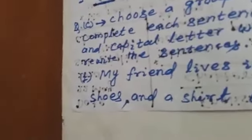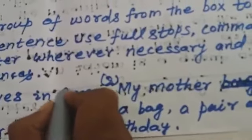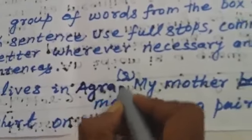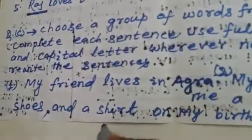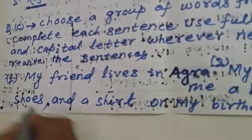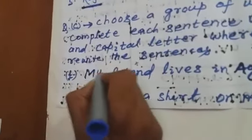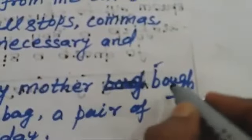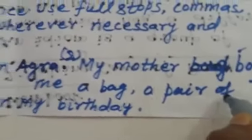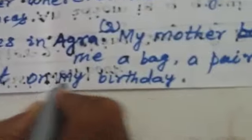Sentence 1: 'My friend lives in Agra.' We take 'in Agra' from the word box. Since 'Agra' is a proper noun, it is written with a capital A. The sentence starts with 'My' (capital M) and ends with a full stop. Sentence 2: 'My mother bought me a bag, a pair of shoes, and a shirt on my birthday.' A comma is used after each item in the list.